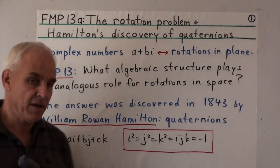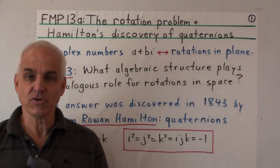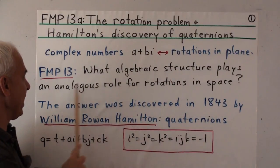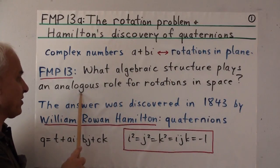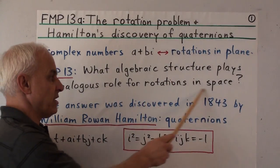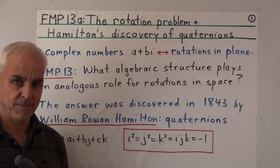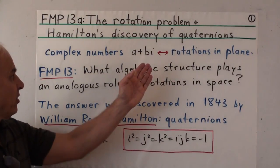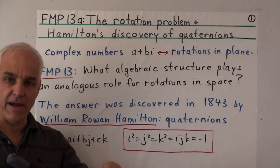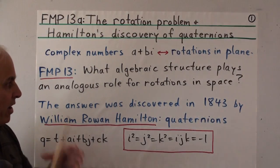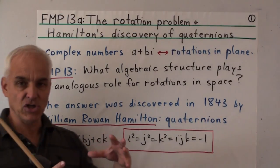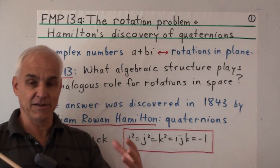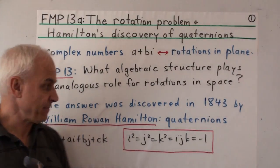The problem that Hamilton posed to himself was: what algebraic structure plays an analogous role for rotations in space? If we have rotations in the plane, we know we can rely on complex numbers to help us with the algebra. But what about rotations in three-dimensional space, which are considerably more subtle and difficult to manipulate?